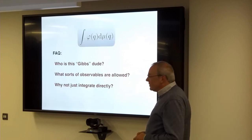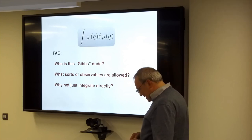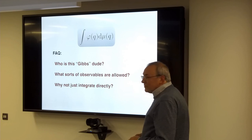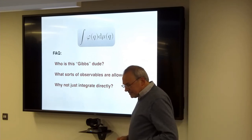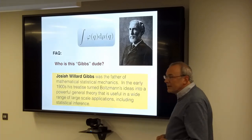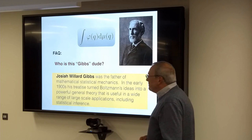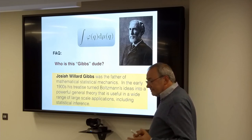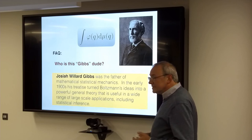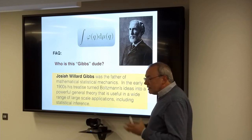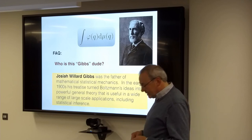I have a little FAQ — frequently asked questions. Who is Gibbs? What sort of observables are allowed? And why not just integrate directly? Gibbs was the father of mathematical statistical mechanics. Boltzmann is often credited with this, but Gibbs took it to the point of a mathematical theory. Many ideas from statistical mechanics carry over into data science and statistics, giving us ways of handling large-dimensional systems.